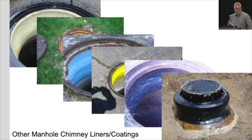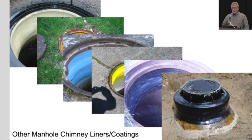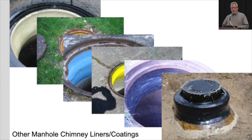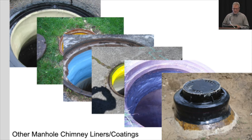There are a myriad of other technologies, including cured-in-place chimney liners, a polyethylene top-hat device for new construction or reconstruction, and a variety of applied coatings put on by brush, by hand, or by spray mechanism. There is absolutely no shortage of products to choose from when rehabilitating or installing sewer manholes to protect that frame chimney joint. The last one is a heat-shrinkable encapsulation system that has been on the market for quite a while.